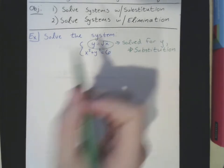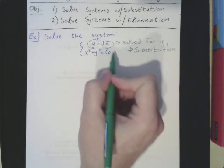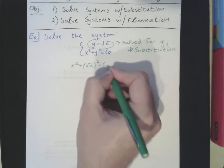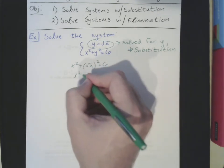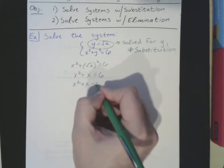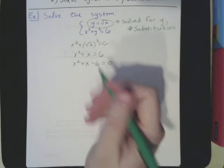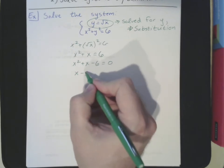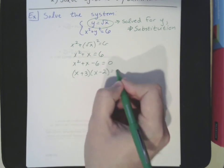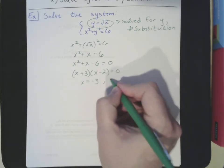We take our equation and substitute into the second equation. We have x squared plus the square root of x, quantity squared, equals 6 — or x squared plus x equals 6 — or x squared plus x minus 6 equals 0. Now we're back to chapter 10, solving quadratics. This factors as x plus 3 times x minus 2, giving us x equals negative 3 and x equals 2.